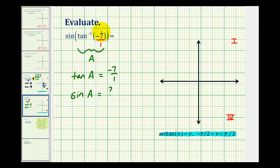And since the tangent function value is negative, we know that our reference triangle must be in quadrant four. So we'll draw a reference triangle in quadrant four, maybe something like this.